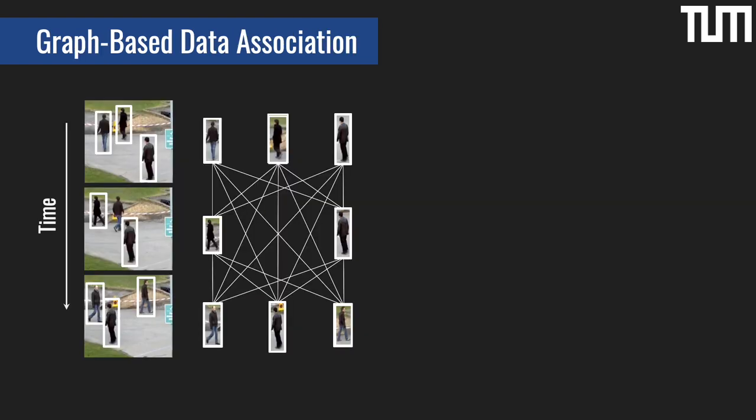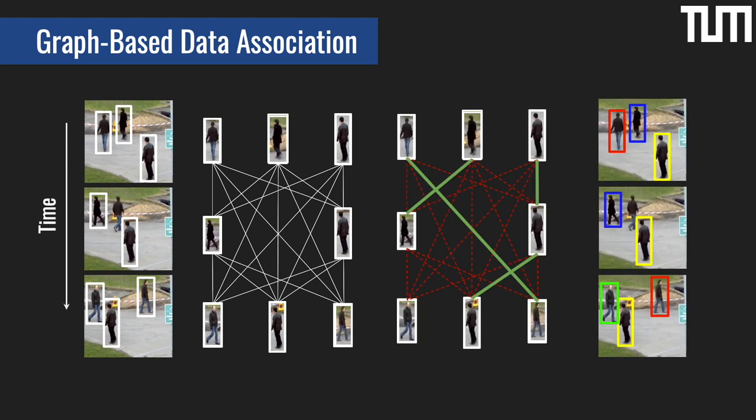Graphs offer a natural formulation for this problem. Nodes represent object detections and edges represent possible temporal links among them. The task then becomes to identify which edges belong to actual trajectories and which edges do not.